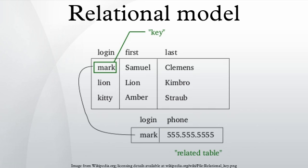Database normalization: Relations are classified based upon the types of anomalies to which they are vulnerable. A database that's in the first normal form is vulnerable to all types of anomalies, while a database that's in the domain key normal form has no modification anomalies. Normal forms are hierarchical in nature. That is, the lowest level is the first normal form, and the database cannot meet the requirements for higher level normal forms without first having met all the requirements of the lesser normal forms.